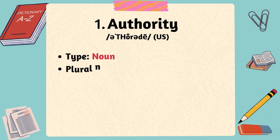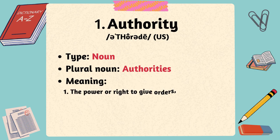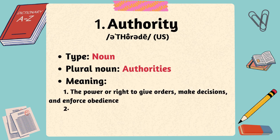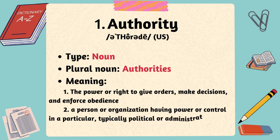Authority is a noun that refers to the power or right to give orders, make decisions, and enforce obedience. It can also mean a person or organization having power or control in a particular sphere. Its plural noun is authorities.